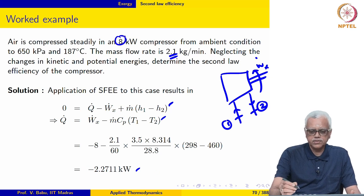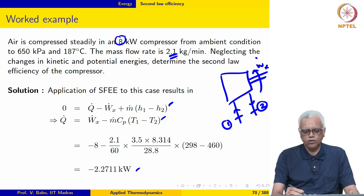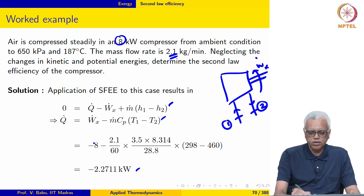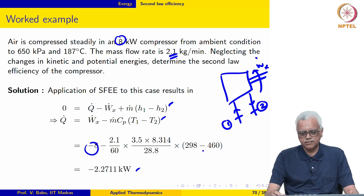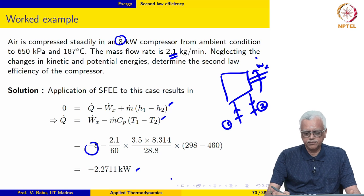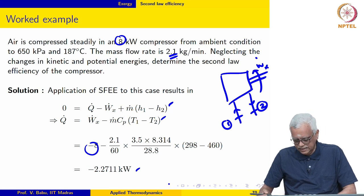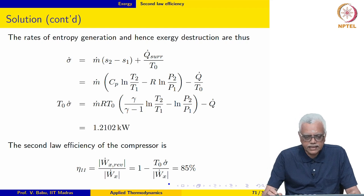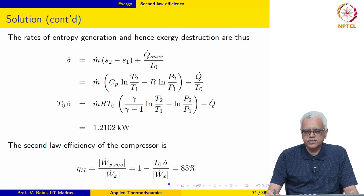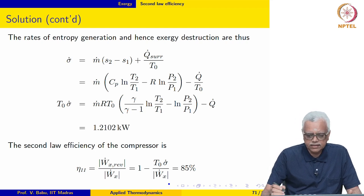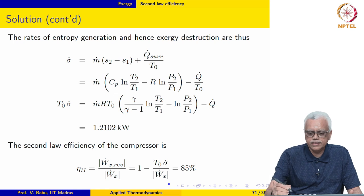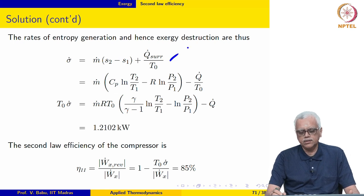Remember, the power of the compressor is given to be 8 kilowatts, so W_x dot is actually minus 8 — keep that in mind. Q dot is now known, and the rate of entropy generation and thus exergy destruction may be evaluated. This is sigma dot.